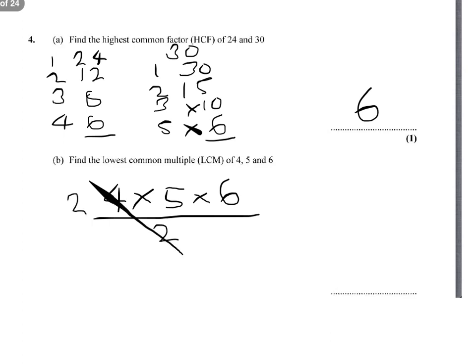So 2 goes into 4 twice. 2 times 5 is 10. 10 times 6 is 60. So 4,